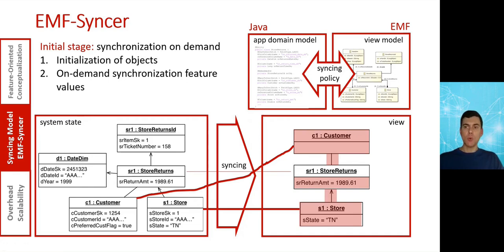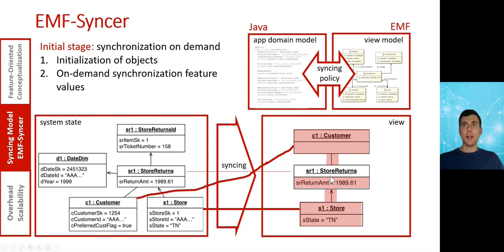When running a model management task like the OCL query, the EMF Syncer will sync only those objects required for performing the query. When object links corresponding to associations in the domain model are traversed in a query, the linked objects will also be synced. In this case, when we traverse these links, the EMF Syncer maps the object customer to an instance of the class Customer, the object store to an instance of the class Store, and the features of the objects used in the query are also mapped.